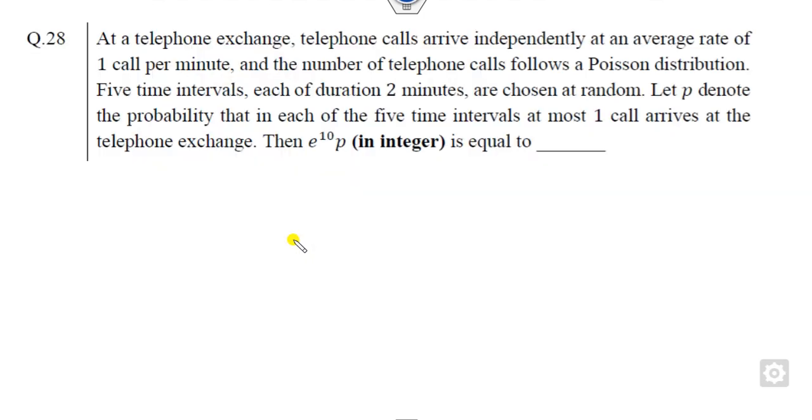So let's start with question number 28. We will try to solve this within one minute. What is the trick behind that? If you read the statement, at a telephone exchange, telephone calls arrive independently at an average rate of one call per minute.